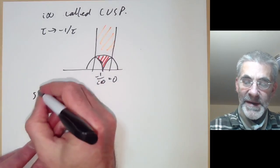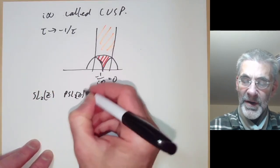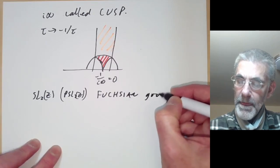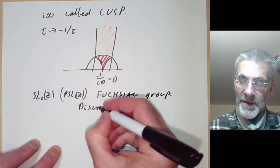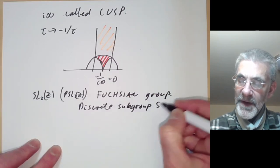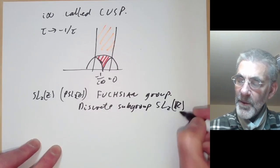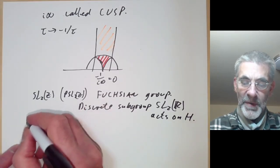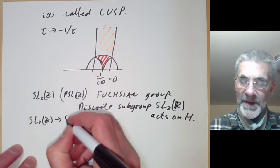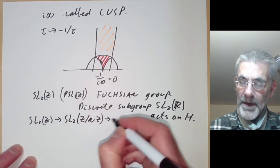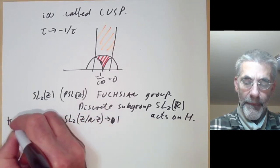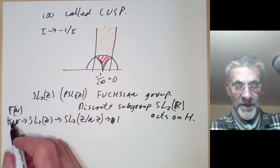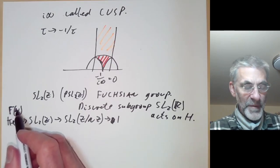I should say that SL2Z or possibly PSL2Z depending on your conventions is an example of a Fuchsian group. So a Fuchsian group means just a discrete subgroup of SL2(R) which acts on the upper half plane. And there are lots of other examples of Fuchsian groups. For example we can take SL2Z and map it to SL2(Z/NZ), and the kernel will be another Fuchsian group which is sometimes called gamma(N), and this turns up a lot in the theory of modular forms. Modular forms for this group are called modular forms of level N sometimes.